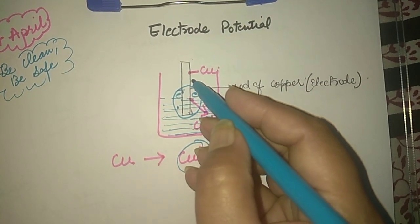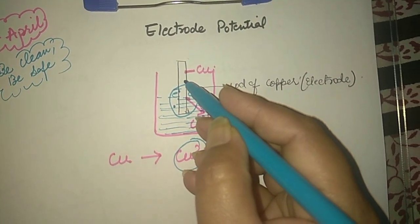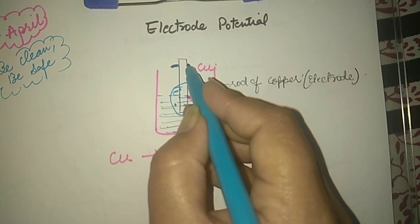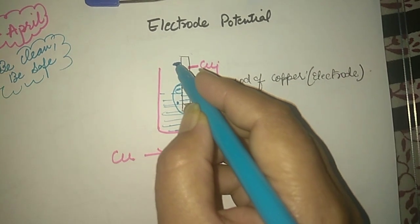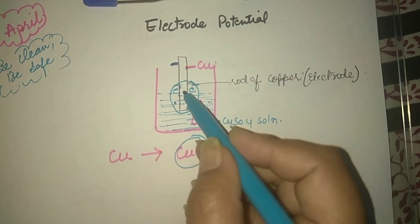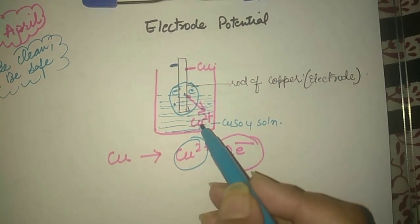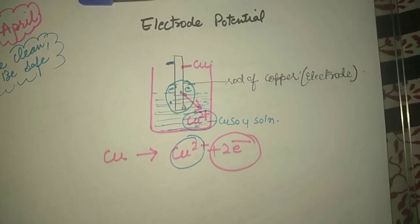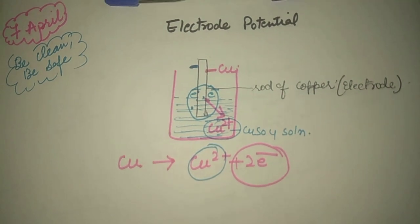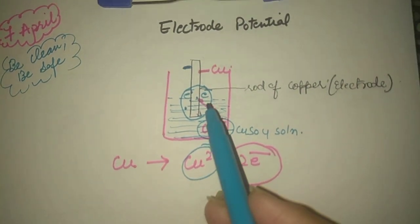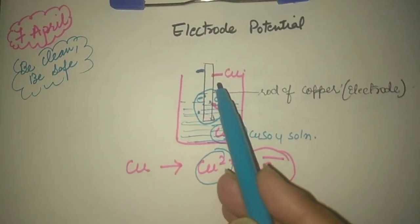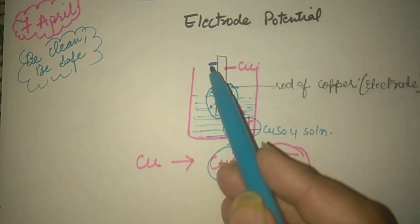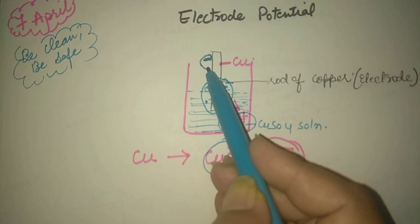Therefore, the electrons accumulated at the electrode will cause it to acquire a negative charge. This electrode acquires a negative charge because electrons are depositing here and the Cu2+ ions are forming and going into the copper sulfate solution. Now, these electrons accumulated at the electrode are the reason the sign at the electrode is negative.